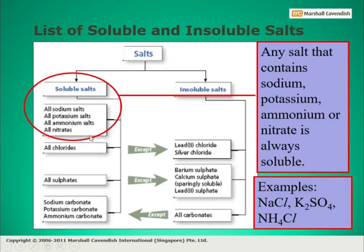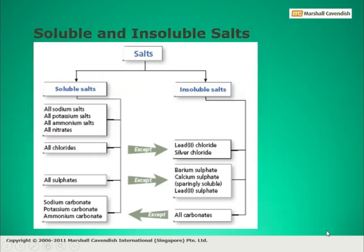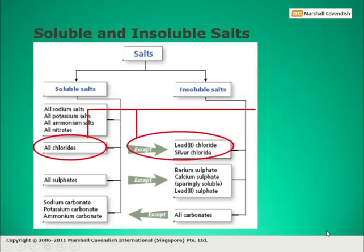For example, sodium chloride, potassium chloride, ammonium chloride — their sulfates, their carbonates, their nitrates — all these salts are soluble. And nitrates of every element are soluble. The second category is chlorides: all chlorides are soluble.